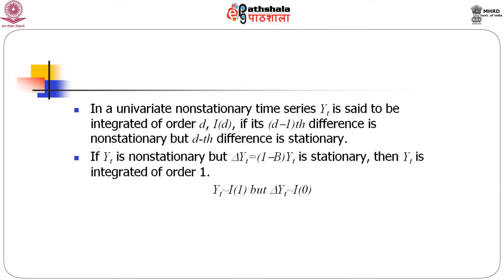In the univariate case, the time series y_t is said to be integrated of order d, denoted I(d), if its (d-1)th difference is non-stationary. That basically implies you have to take d-th differences in order to obtain stationarity. If y_t is non-stationary but delta y_t = (I - L) * y_t is stationary, then the series is integrated of order 1. So y_t follows I(1) but delta y_t follows I(0).